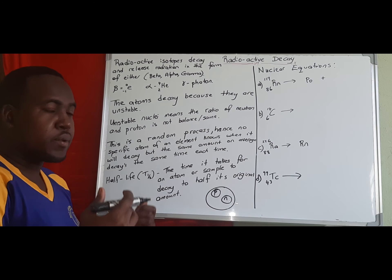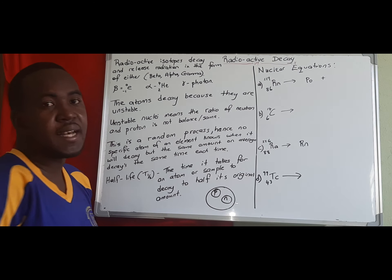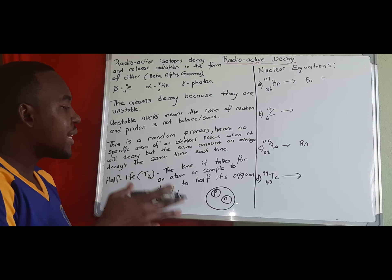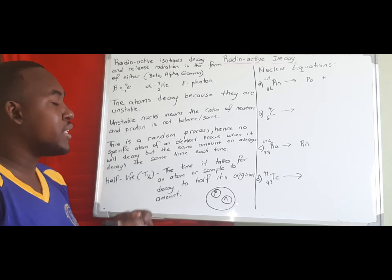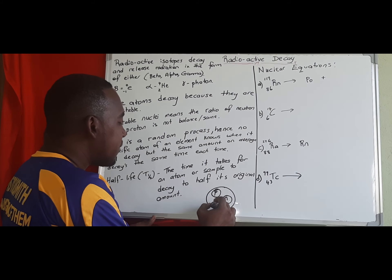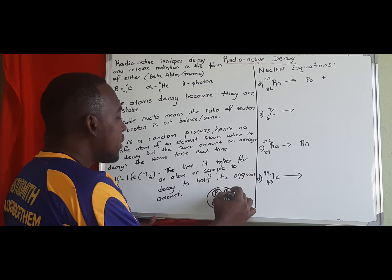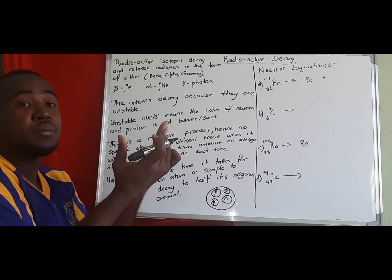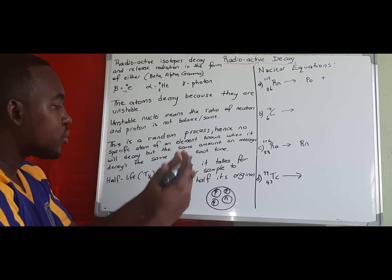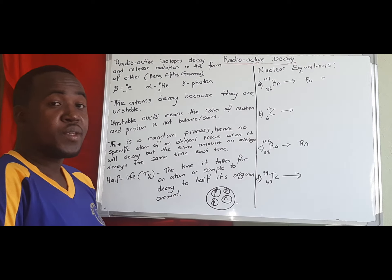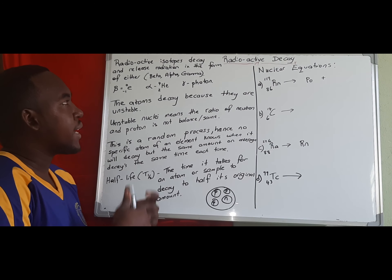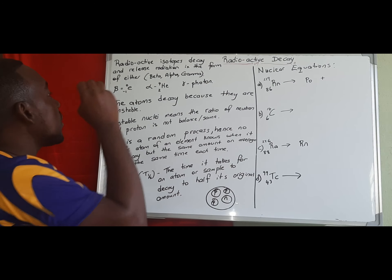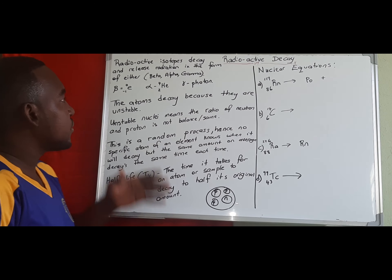Once you have more protons than neutrons, or more neutrons than protons, it makes the atom unstable. Those excess particles have the capability of attracting to something else, causing the nucleus to deform and eventually decay. The decaying of the atom splits the nucleus and gives off radiation.